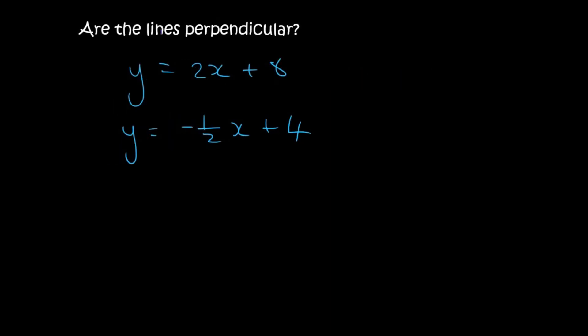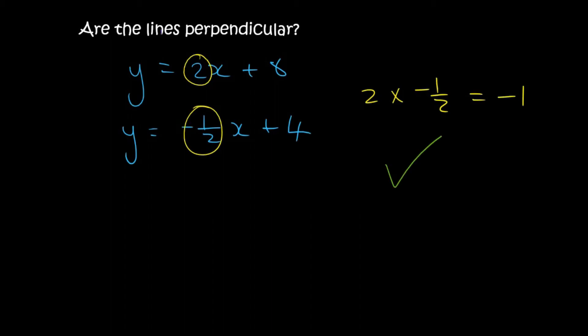For these two lines, the gradient of the first one is 2 and the gradient of the second one is negative a half. If you multiply 2 with negative a half you get negative 1, so yes, these lines are perpendicular.